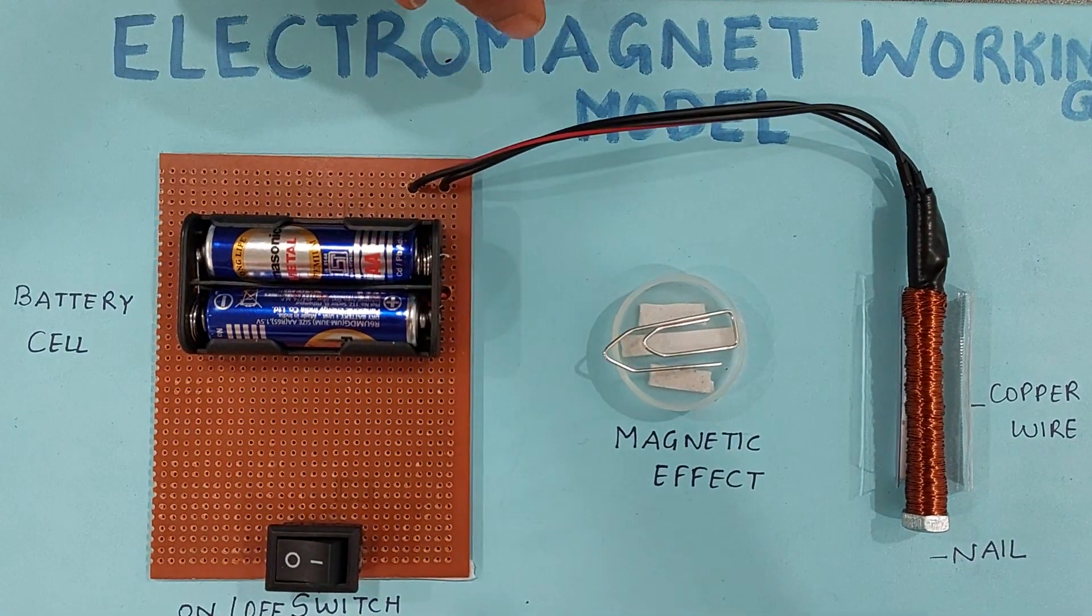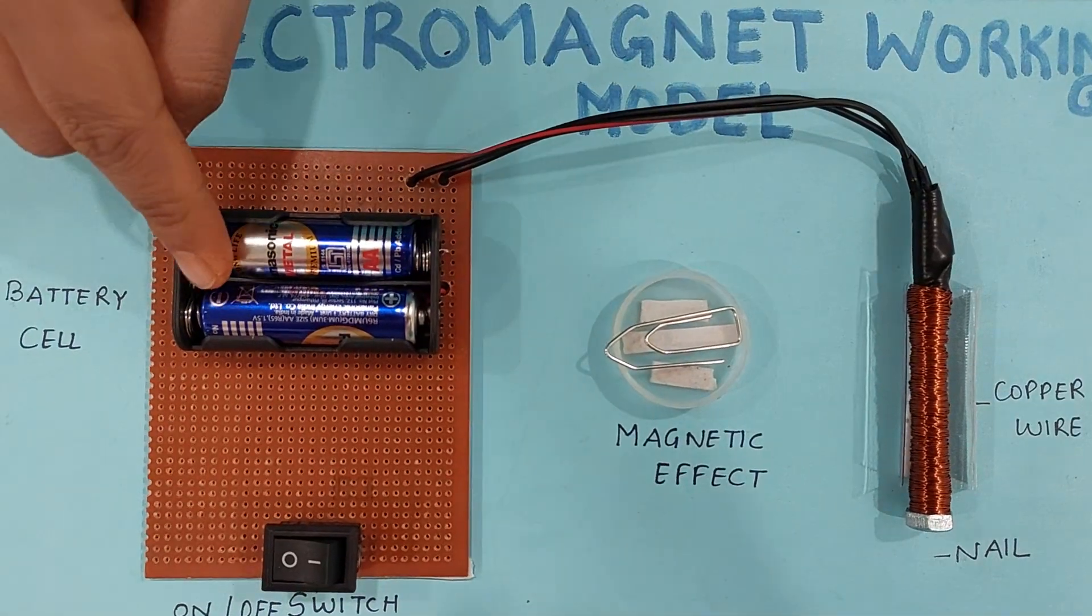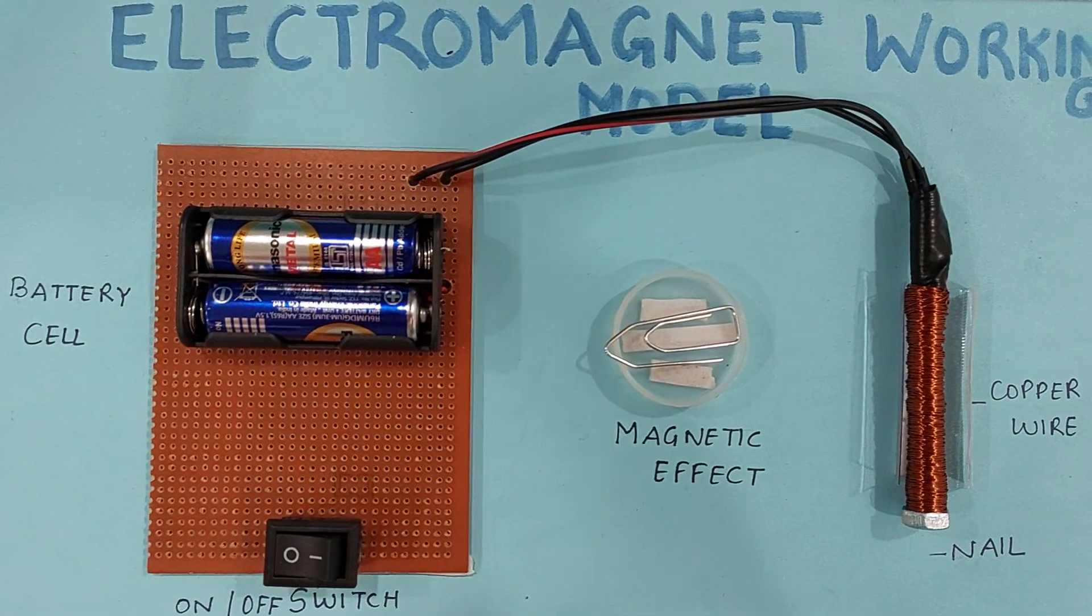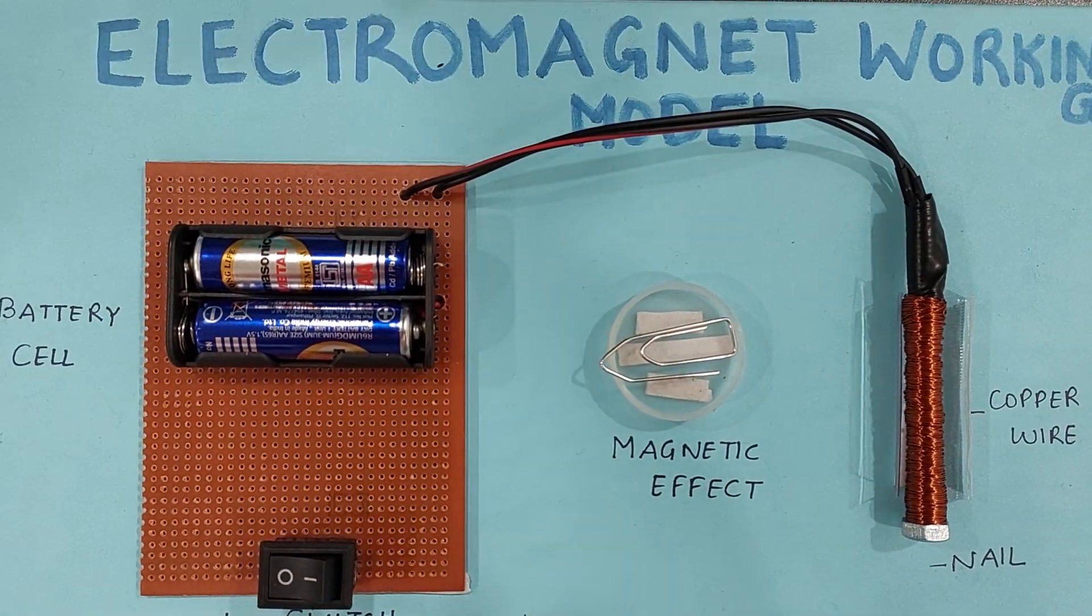So you know this electromagnet works on the principle of magnetic effect of electric current. Okay, now what is magnetic effect of electric current? Let's see.